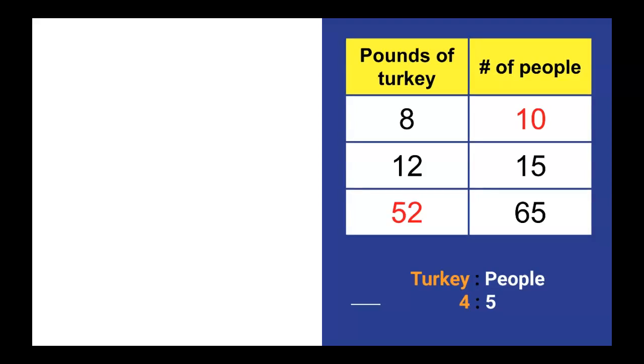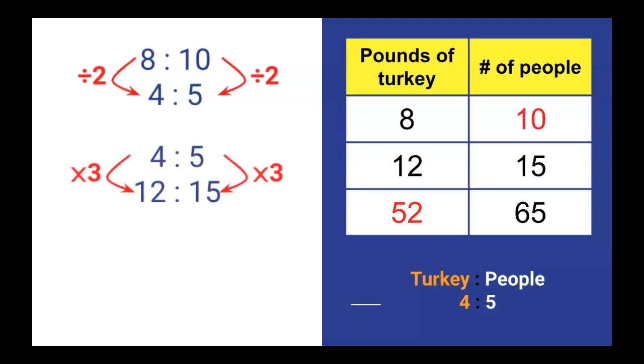In our table relating turkey pounds to people, if you look at 8 to 10, that ratio, and divide each side by 2, you get this reduced ratio, 4 to 5. For every 4 pounds of turkey, there are 5 people. If you scale that up by multiplying each side by 3, you're going to get the second row of our table, 12 pounds of turkey for 15 people.